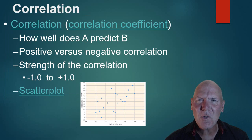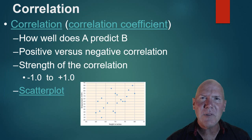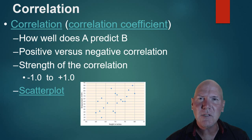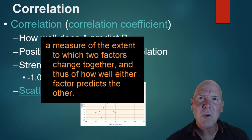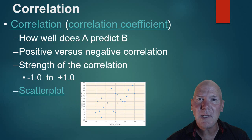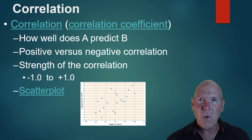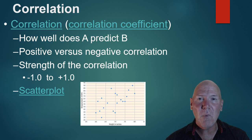So first of all, correlations. What a correlation is, is basically a predictor — when something happens, another event is likely to occur along with it. For example, the more time you spend studying, the higher your marks go. So in this case, A is predicting B: how much you study (A) predicts higher marks (B). The more A, the more B — that is a positive correlation.